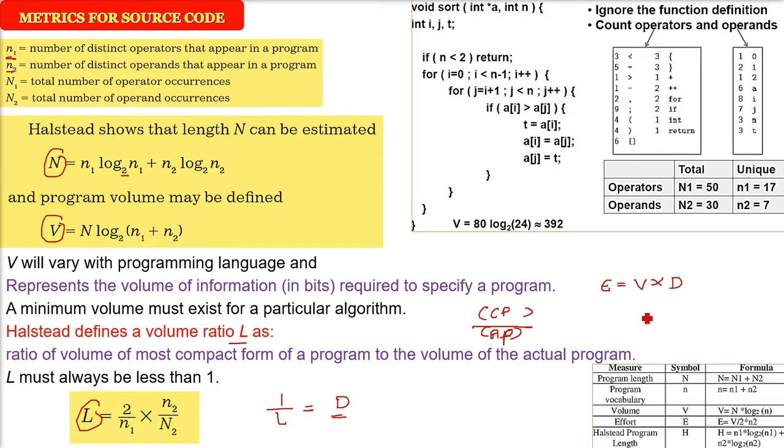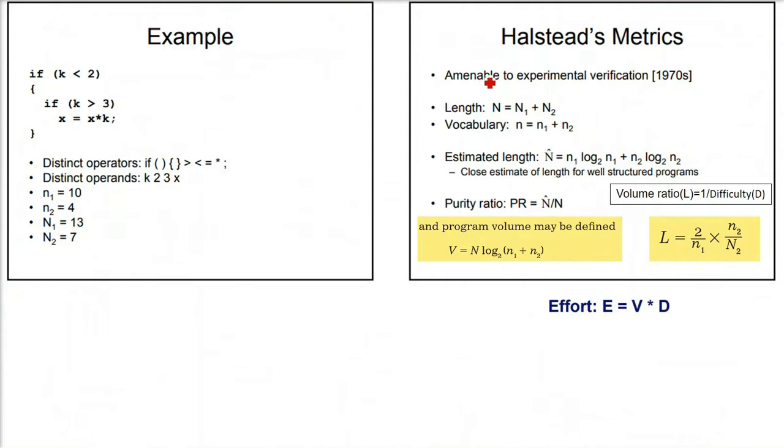Various parameters can be found using different expressions. We will take an example of Halstead's metrics. Various things can be estimated using Halstead metrics. We have taken a very small code example. We have to find out the operators and operands. Every formula depends on these values only: small n1, small n2, capital N1, capital N2.